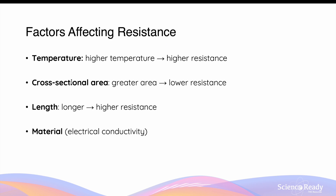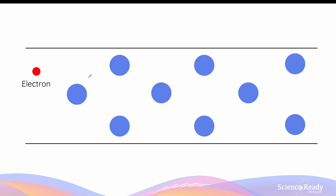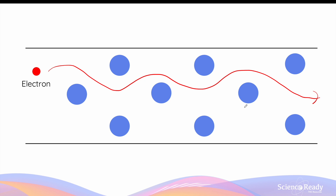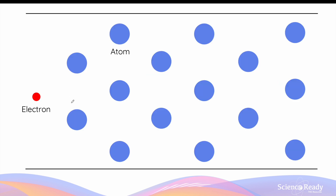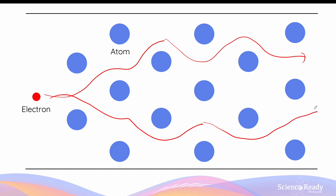The next factor is the cross-sectional area of the conductor. A greater cross-sectional area, meaning a thicker wire, results in lower resistance. If the conductor is made thinner, the electron has fewer paths to navigate through. In contrast, increasing cross-sectional area gives electrons more paths to choose from, increasing the flow of electrons and therefore increasing the current.